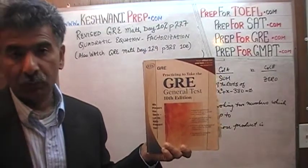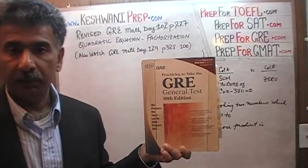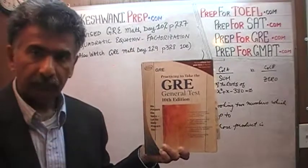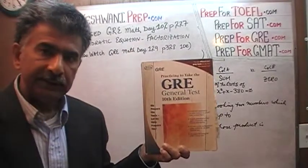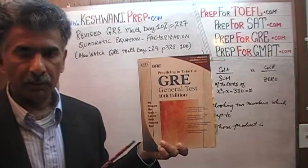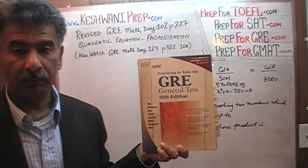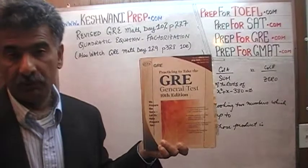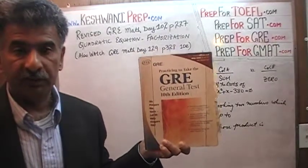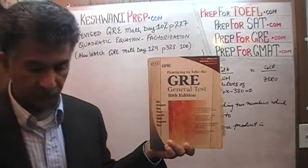They have added two or three other types of questions in the new exam, but the three older types have not changed. They are still there. The quantitative comparison questions are there — a lot of people have trouble with those. The regular multiple choice questions where there is only one right answer are still there, and the graph questions are still there, right here in this book.